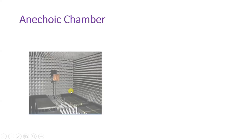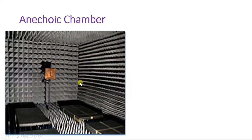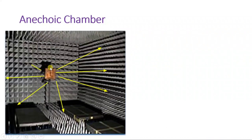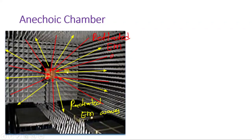Let me show you different anechoic chambers to give you an idea of how they look. Here you can see an anechoic chamber where, on the wall, there is radiation absorption material in a pyramidal shape with a square base. This material minimizes internal reflection so that it does not affect the device under test. When the device is measured, radiation from the device travels to the wall and should not come back, as that would cause measurement error.